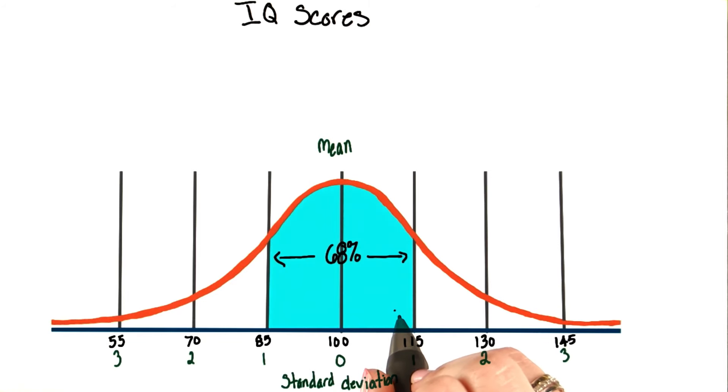68% of the population is within one standard deviation from the mean. So 68% of the population has an IQ score between 85 and 115.